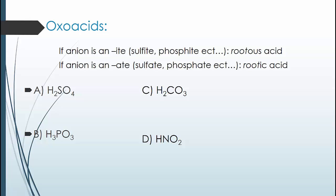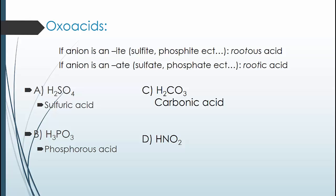Try each of these before moving on, or maybe watch the first one and then try the rest. For the first one, we have the polyatomic ion sulfate. Since it has an "-ate" ending, it becomes the "-ic" ending when we do the acid, so this becomes sulfuric acid. For the next one, we have phosphite. Since the polyatomic ion has the "-ite" ending, the acid will have the "-ous" ending, giving us phosphorous acid. For the next one, we have CO₃, which is carbonate. Since it has an "-ate" ending, the acid will have an "-ic" ending, and it becomes carbonic acid.